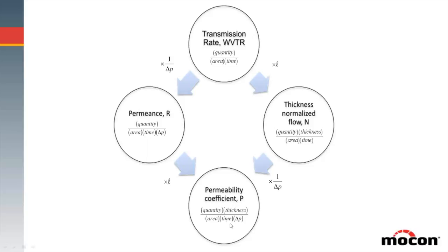Ultimately, if you normalize to the pressure differential and to the thickness of a material, you get what we call the permeability coefficient. This is an innate characteristic or innate measurement of a polymer type. You'll see books listing PET, polyethylene, and others with permeability coefficients — it's a great way to characterize which material is better than another, and a practical tool for engineering or designing a package to achieve a required barrier.